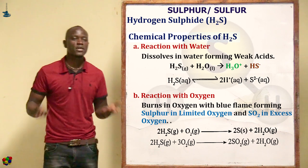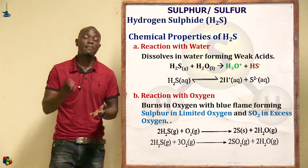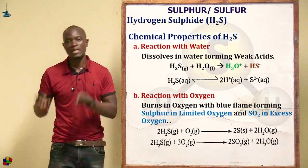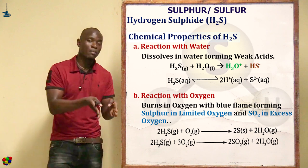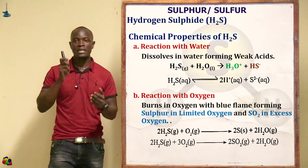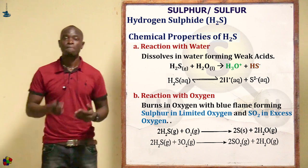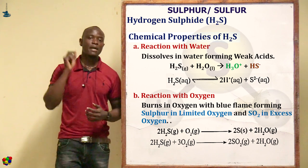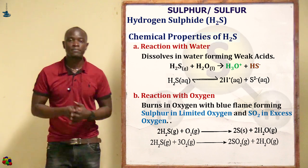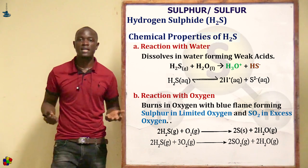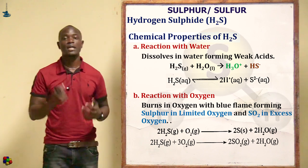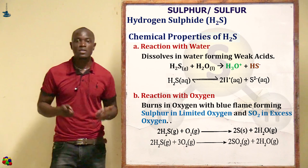Because it is a very weak dibasic acid, it can form hydrogen sulfides such as sodium hydrogen sulfide, potassium hydrogen sulfide, and calcium hydrogen sulfide. It can also form sulfides such as sodium sulfide, potassium sulfide, magnesium sulfide, and calcium sulfide.